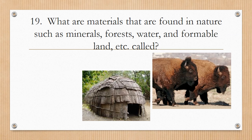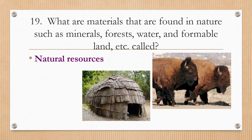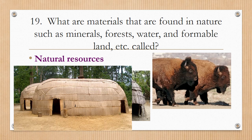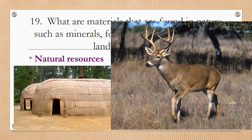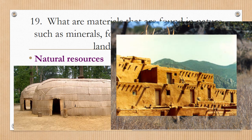Number nineteen: What are materials that are found in nature, such as minerals, forests, water, and farmable land, called? Natural resources. The buffalo was a natural resource for the Lakota Sioux. The bark used in the Iroquois longhouse is a natural resource from trees. One tribe's home was made out of mats woven from river reeds, since they lived along a river bank and river reeds were the natural resources available. A deer is another common natural resource used by eastern woodland Indians including the Iroquois, and the clay in the Pueblo dwelling is also a natural resource.